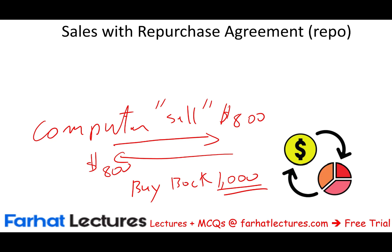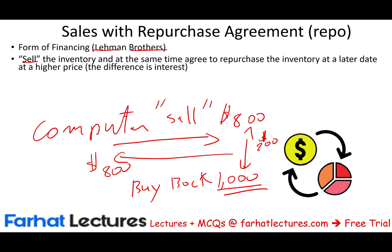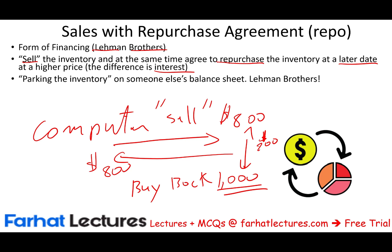This doesn't make sense at first — why would you do that? What I'm actually doing is putting up collateral. I'm asking you for $800, giving you my computer as collateral, and promising to buy it back for $1,000. That means you made a profit of $200. You gave me $800, held the computer as collateral, and got back $1,000. This is a form of financing, not really a sale. If it's not really a sale, it means the inventory is still yours. The $200 difference is interest expense.